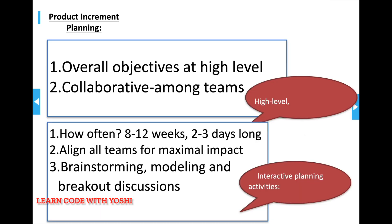That is the difference between sprint and PI planning. A common question is how often PI planning is conducted — it usually covers about 8 to 12 weeks, which covers multiple sprints. It might also take two to three days, which is why this is considered a very important and long meeting.